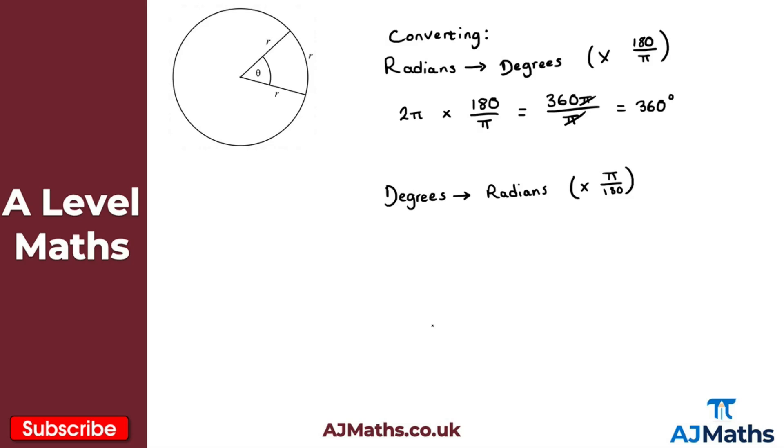So again let's just pick a starting point here. Let's say we've got 60 degrees. I've got 60 degrees here and I want to convert this to radians. What I do here is I times this by π over 180. So if we just get rid of the units here, I've got 60 times π over 180.